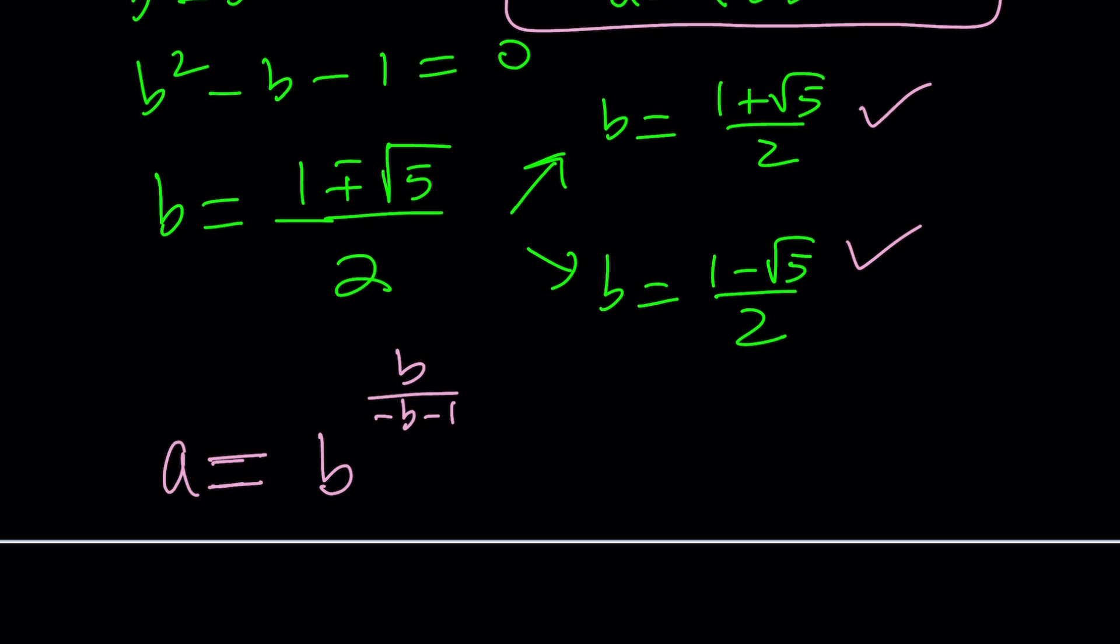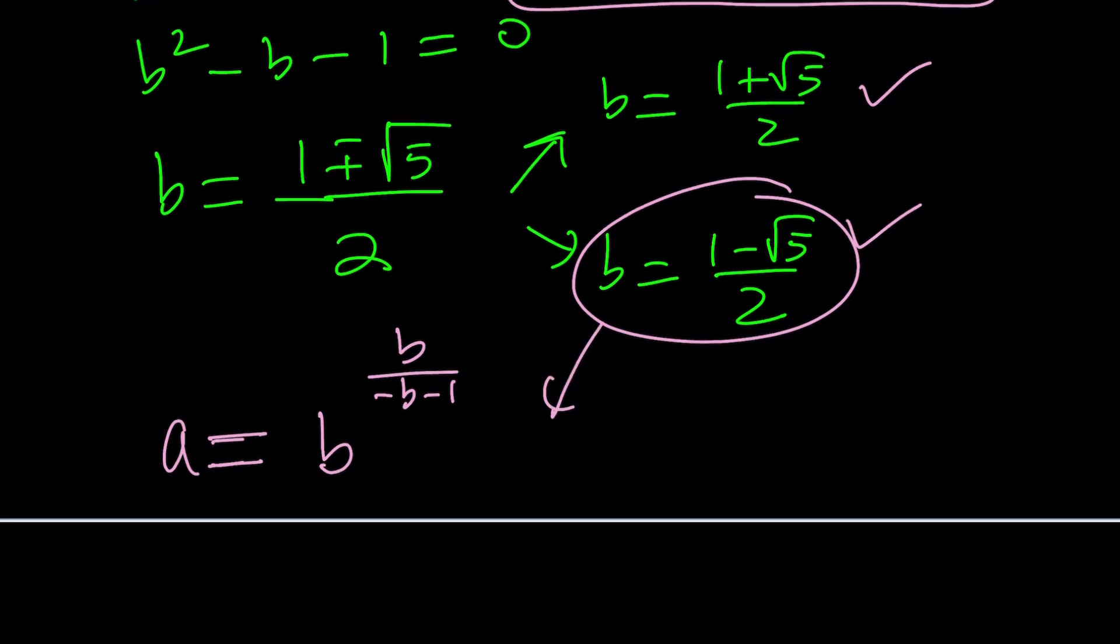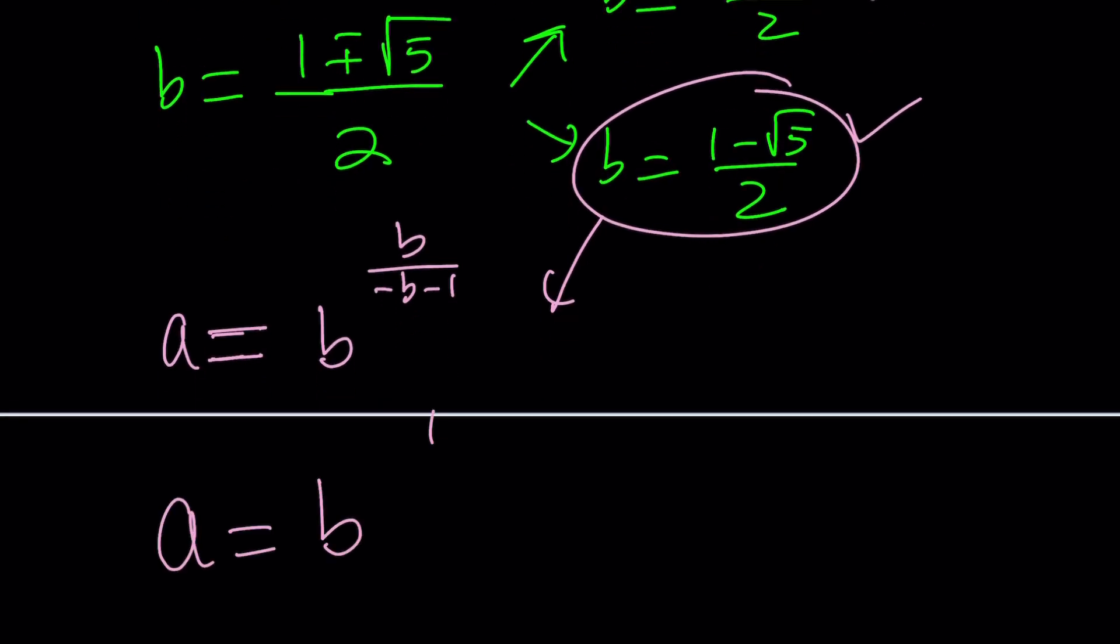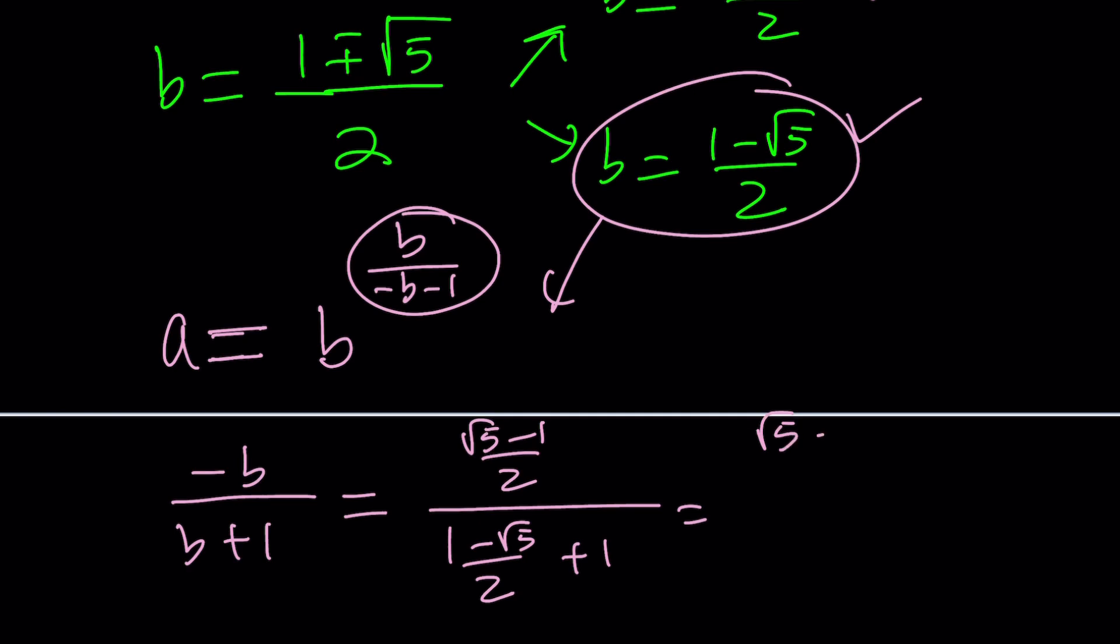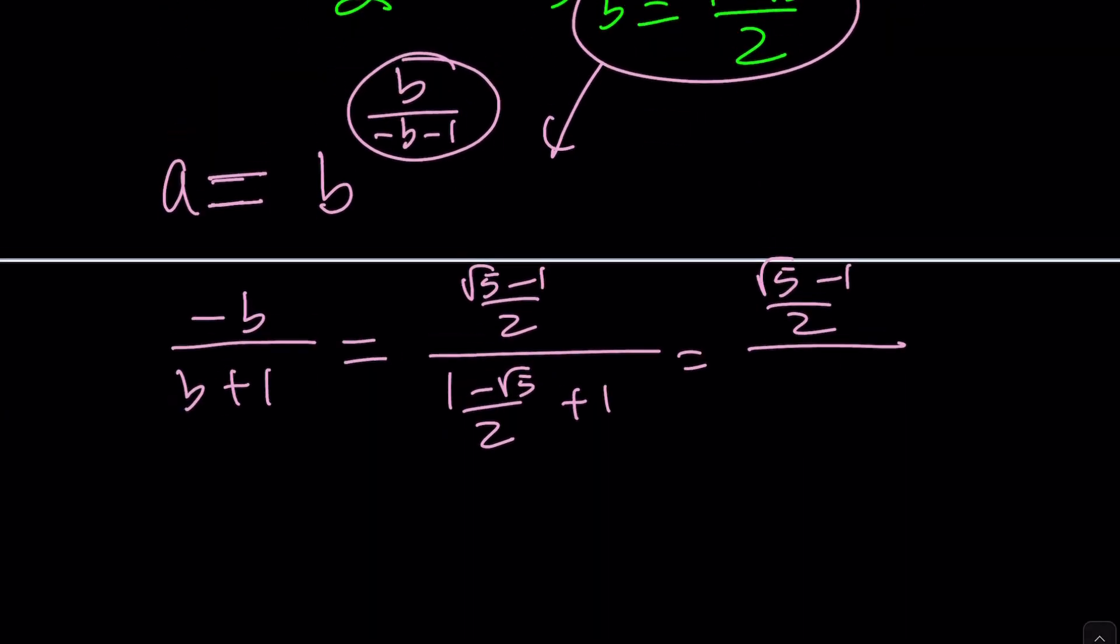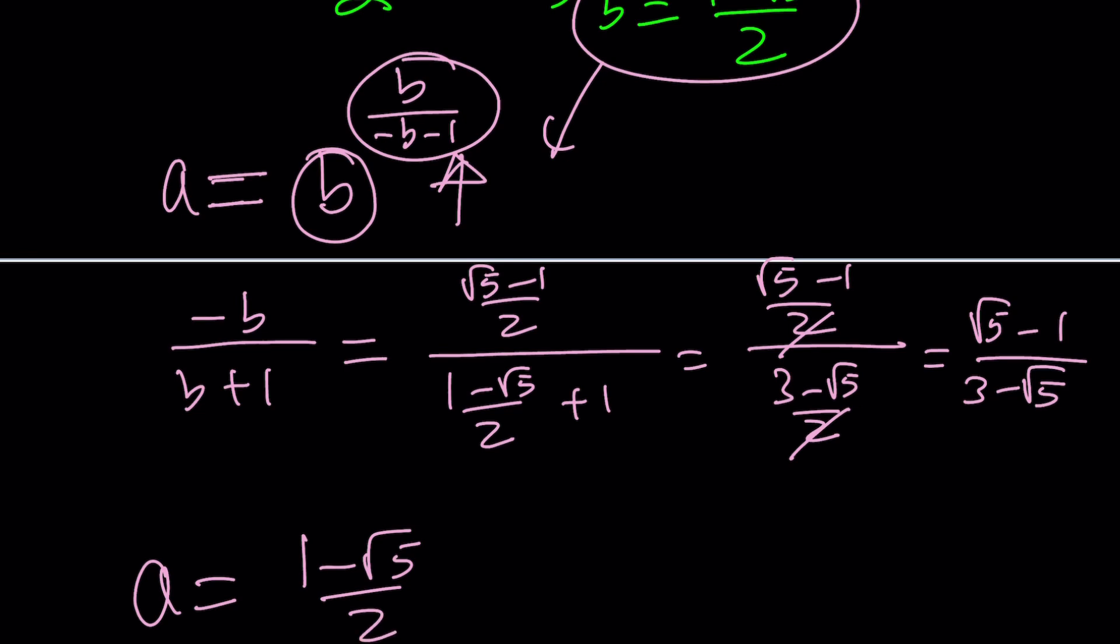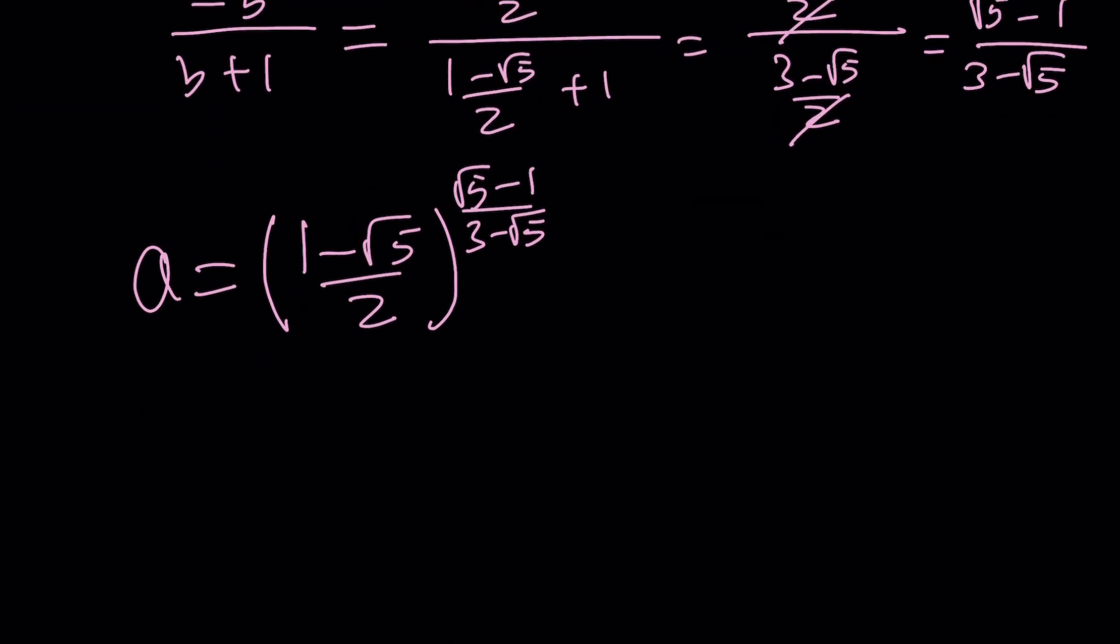Which one should we use? Probably, since we're negating it, I would probably use this one. Let's use that one. So now we can write a as b to the power 1 minus root 5 over 2. I'm just going to go ahead and evaluate this first. So what is negative b over b plus 1? Negative b is just going to be root 5 minus 1 over 2. And b plus 1 is going to be 1 minus root 5 over 2 plus 1. That should be root 5 minus 1 over 2 divided by 1 minus root 5 plus 2, that's 3 minus root 5 over 2. The 2's cancel out and we end up with root 5 minus 1 over 3 minus root 5 as the value of this exponent right here. So a equals b to the power, which is 1 minus root 5 over 2, to the power root 5 minus 1 over 3 minus root 5. You can definitely evaluate this using a calculator. No big deal, but that's what it is exactly.